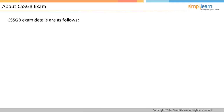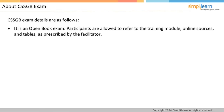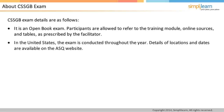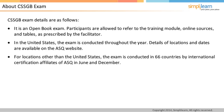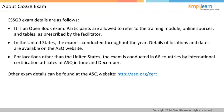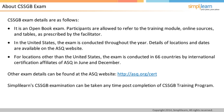CSSGB exam details are as follows: it is an open book exam. Participants are allowed to refer to the training module, online sources, and tables as prescribed by the facilitator. In the United States, the exam is conducted throughout the year, and details of locations and dates are available on the ASQ website. For locations other than the United States, the exam is conducted in 66 countries by international certification affiliates of ASQ in June and December. Simply Learn's CSSGB examination can be taken any time post-completion of the CSSGB training program.